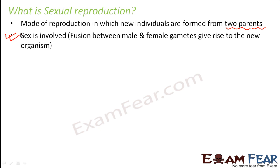Our body is made up of cells. Out of so many cells inside our body, there are certain specialized cells which help in the process of reproduction. Those specialized cells are called sex cells, or they are called gametes — also known as germ cells. When the male sex cells and the female sex cells fuse together and combine, they give rise to a new organism. So fusion between the male and the female gametes is important.